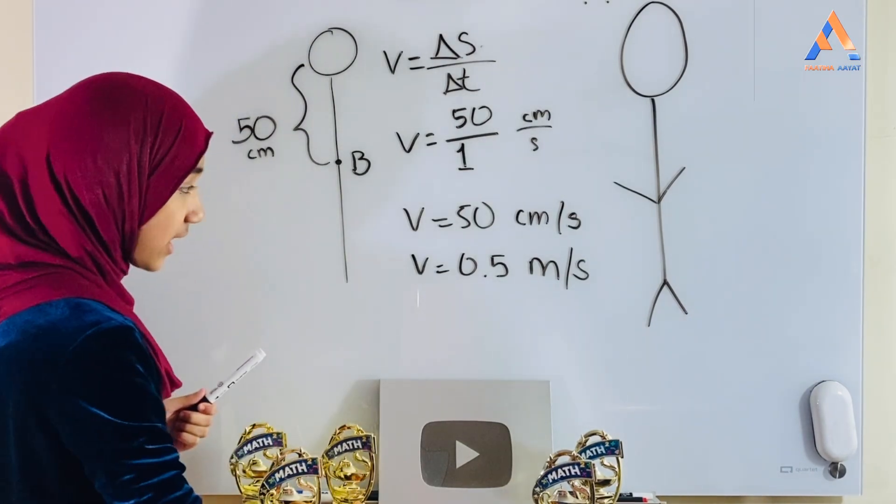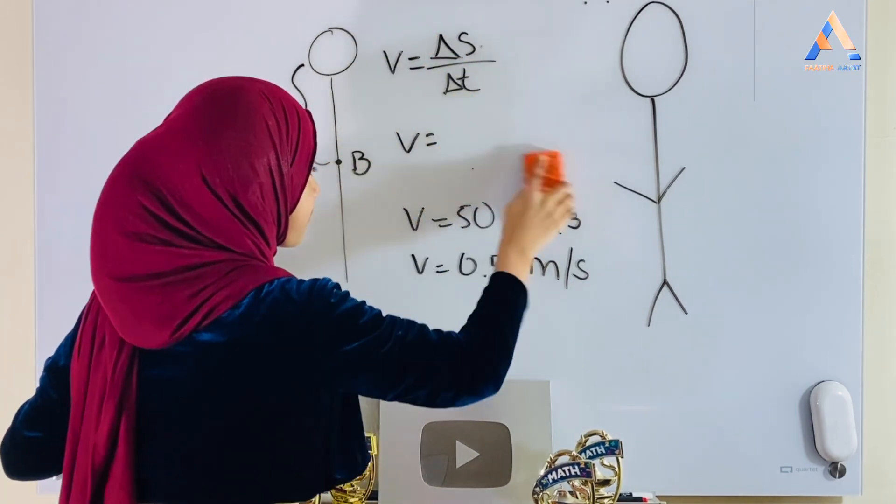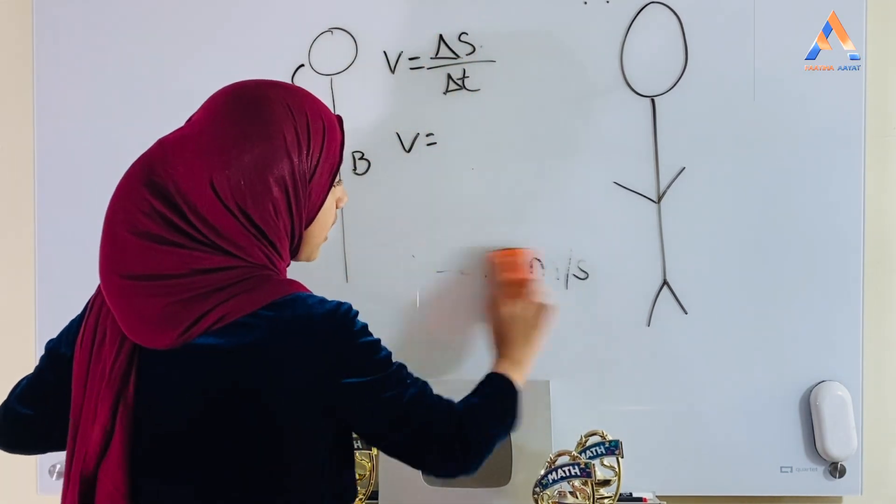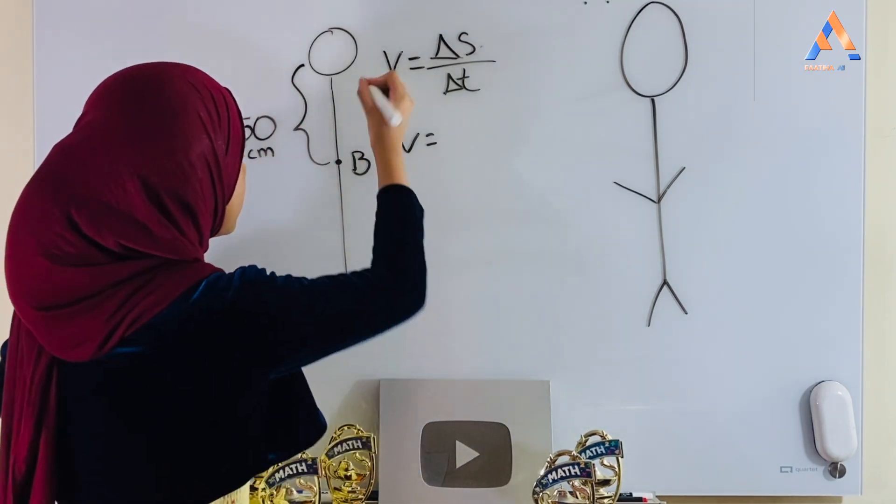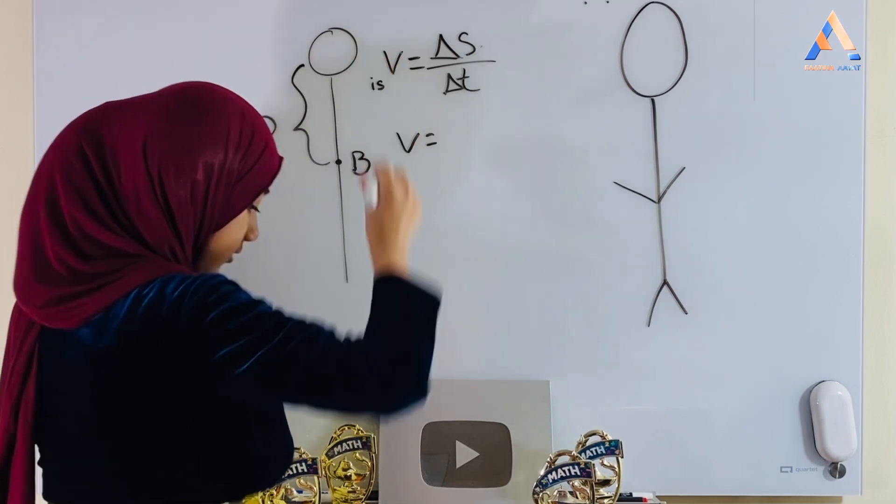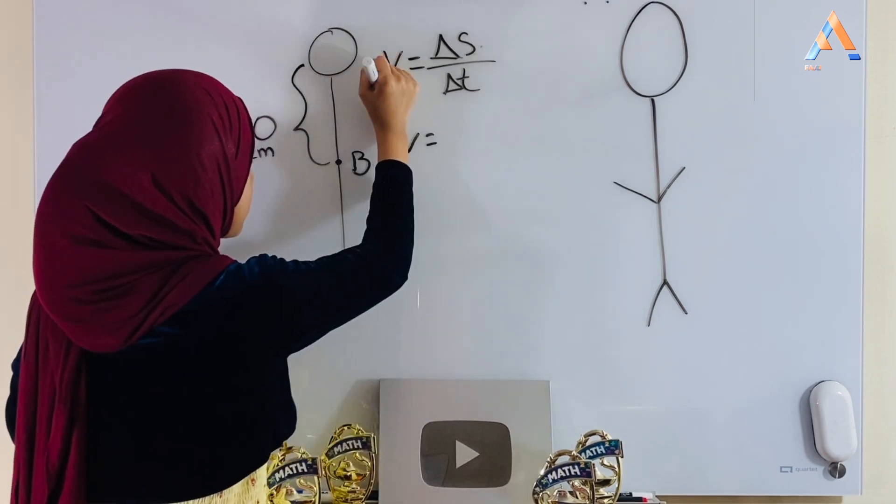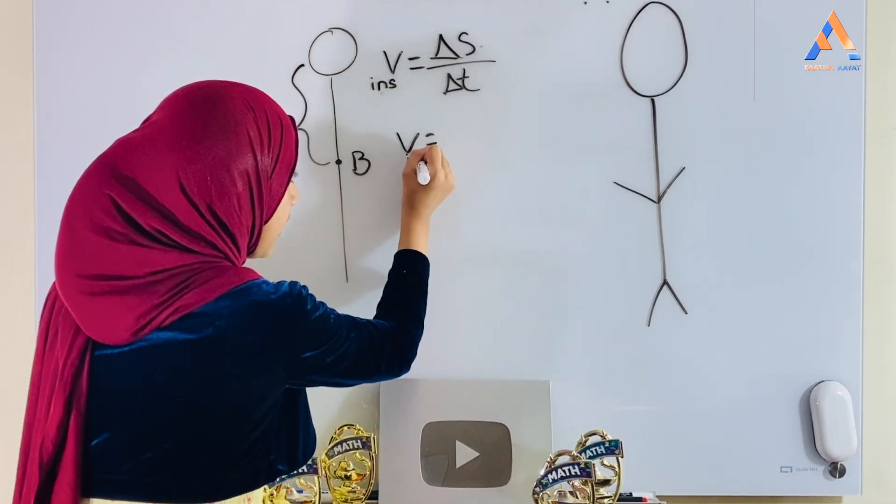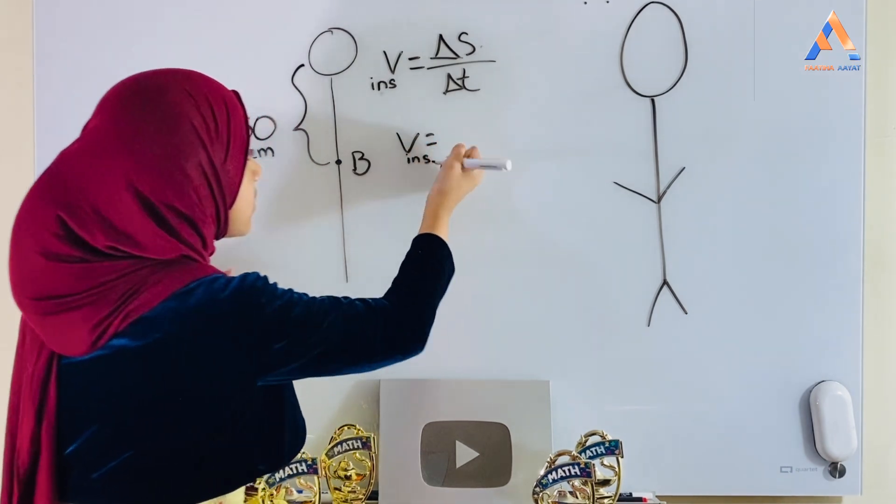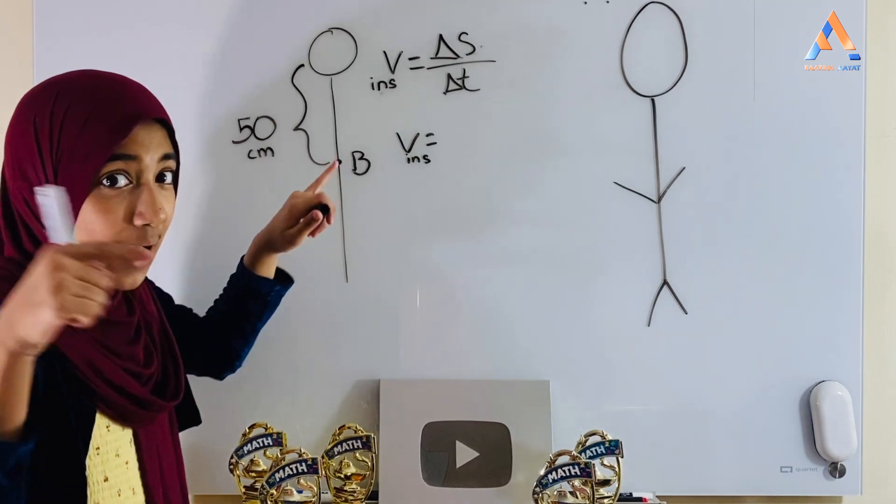So in that case, all this is erased, and this becomes a new thing. The person basically wants the velocity of VINS, that represents instantaneous. Instantaneous means at that point. At that point, remember, the displacement in that point is 0.